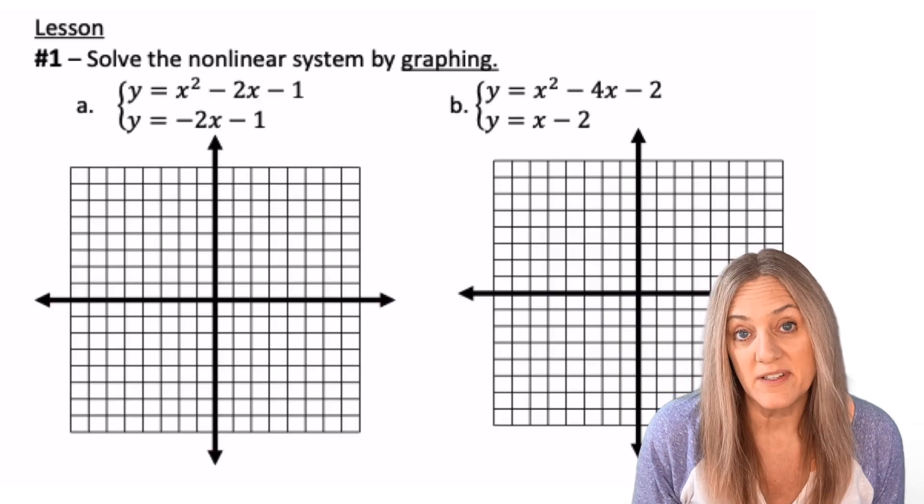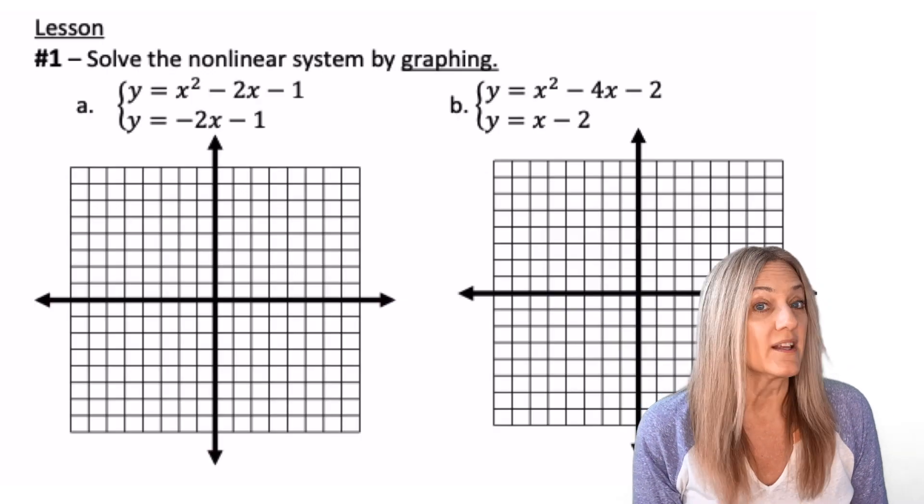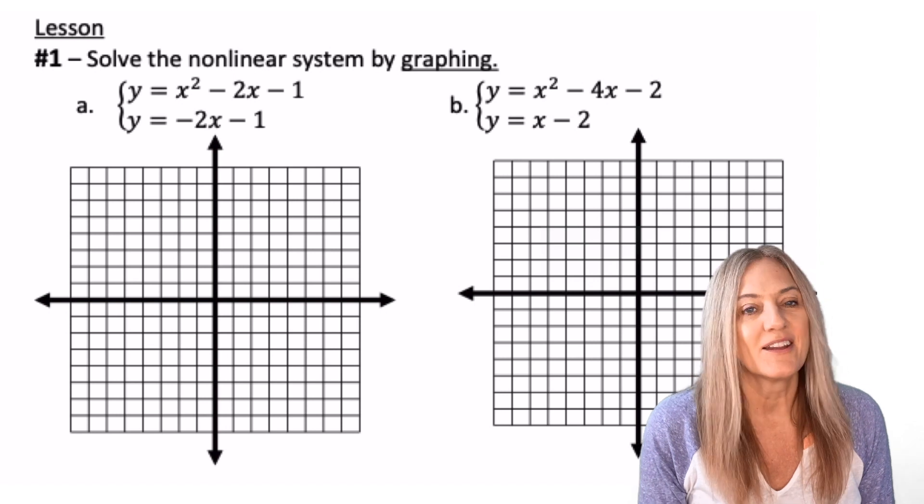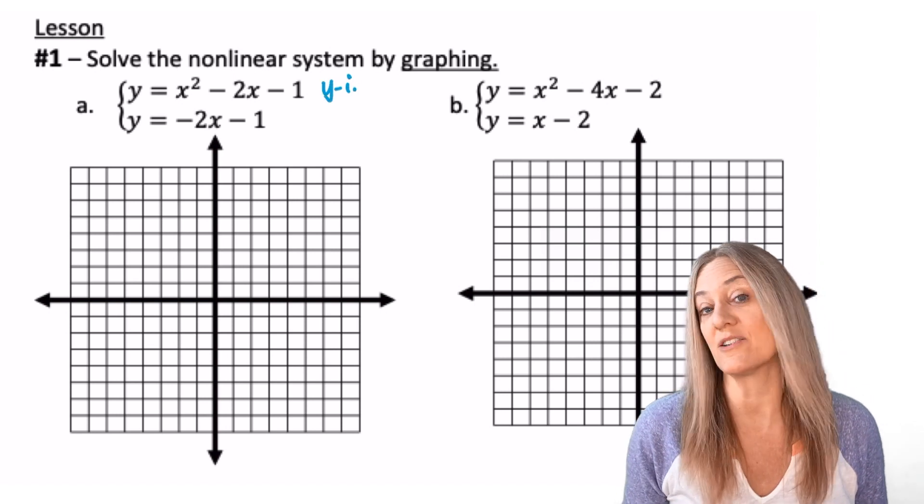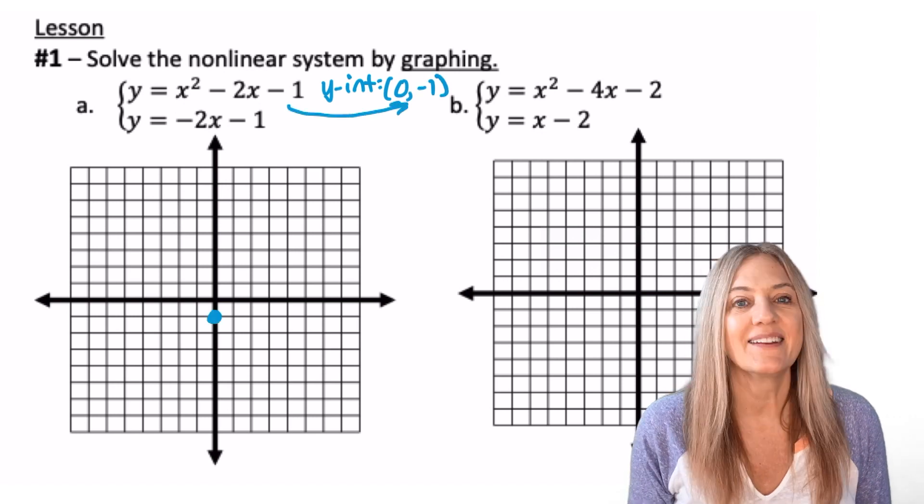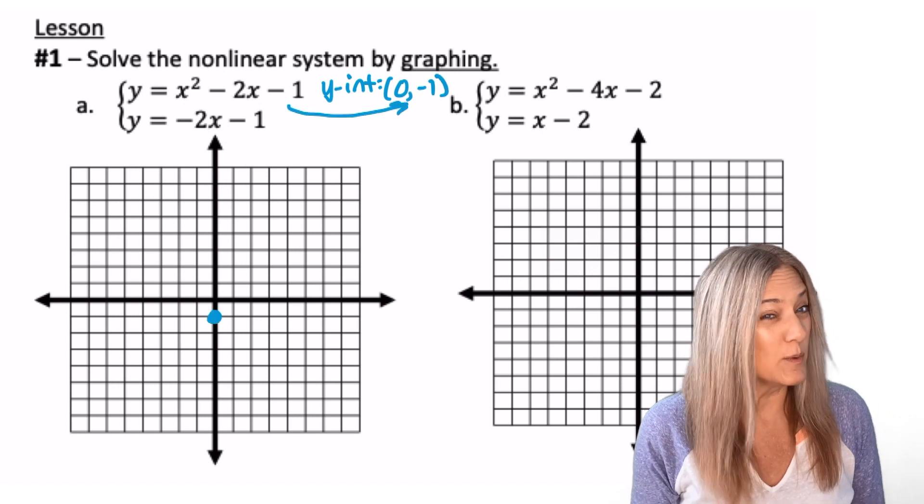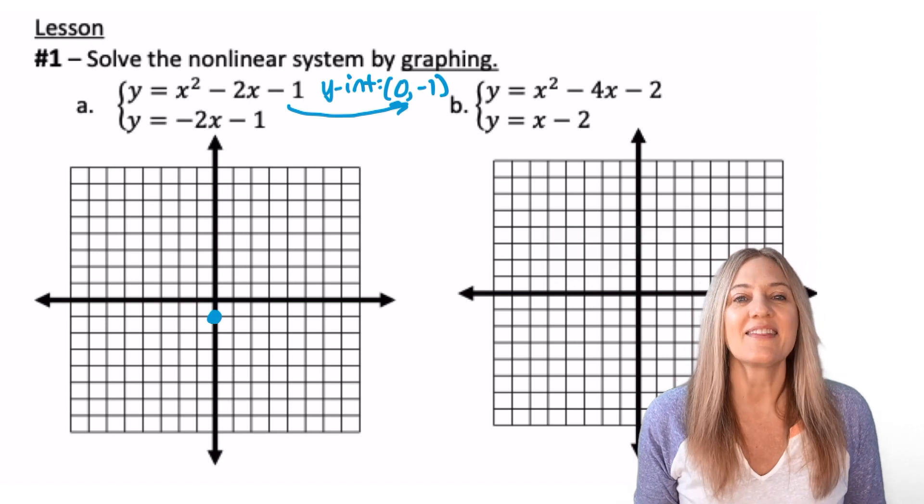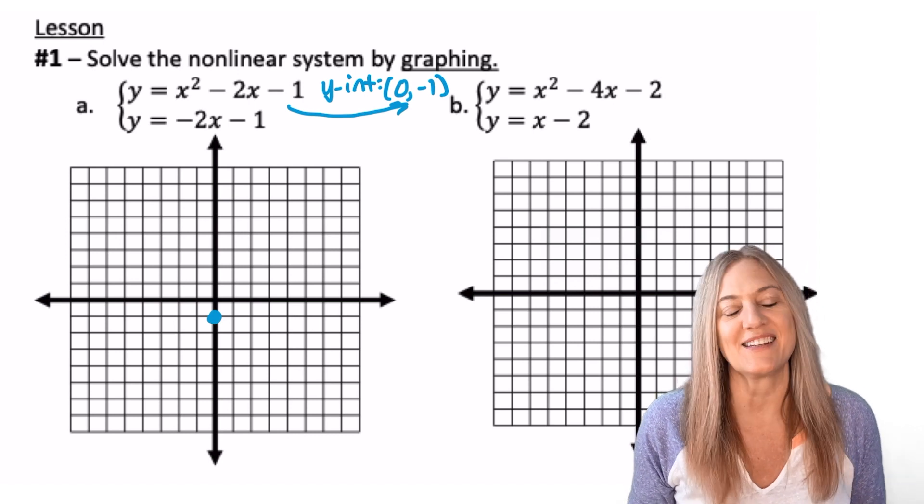Now let's graph a system. We see the first one is a parabola, quadratic. Well, it's in standard form, so I know the y-intercept immediately. It's at 0, negative 1. Next, we'll need to get the vertex. Do we remember? Let's find that average of the two x-intercepts.